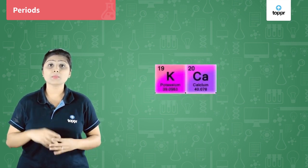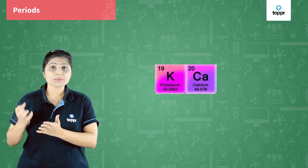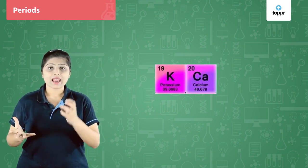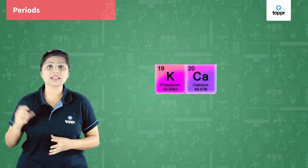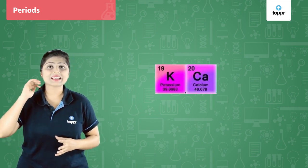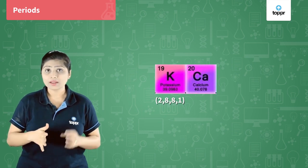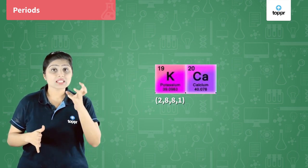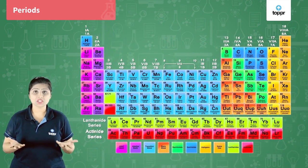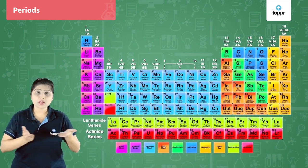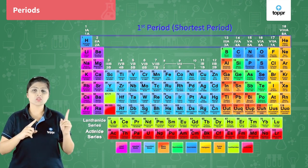Similarly, if we take potassium and calcium. Potassium is the 19th and calcium is the 20th element. Potassium's atomic number is 19, it has 19 electrons. They are arranged as 2, 8, 8, 1 and electrons in calcium are arranged as 2, 8, 8, 2. They have 4 shells, which means they belong to the fourth period.